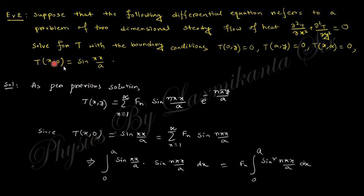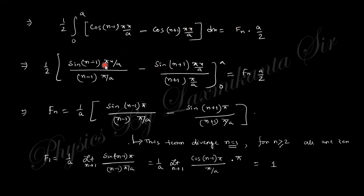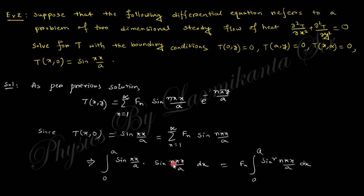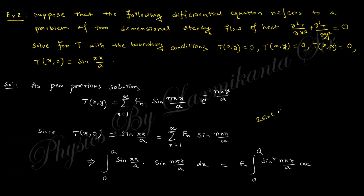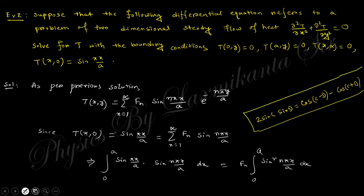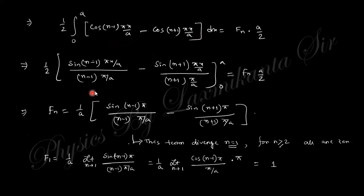Applying the boundary condition at y equals 0, T(x,0) equals sin(πx/a). So sin(πx/a) equals the summation of F_n · sin(nπx/L). Multiply both sides by sin(nπx/L) and integrate. The right-hand side gives L/2. For the left-hand side, use the product-to-sum formula: 2·sin(C)·sin(D) equals cos(C minus D) minus cos(C plus D). Using this formula, you get a specific expression after integration.